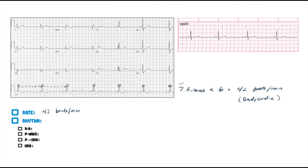Just take a look at the EKG. Step back and look at it — you should be able to identify that this is pretty regular: 1, 2, 3, 4, 5, 6, 7, 8, and a little bit of that last one. So this is definitely a regular rhythm. I would say that these are regular R-to-R intervals.